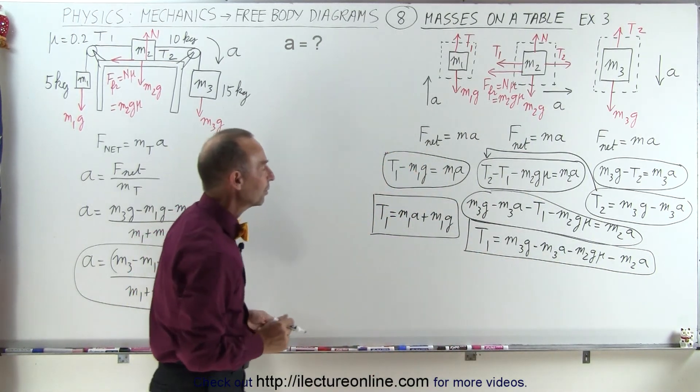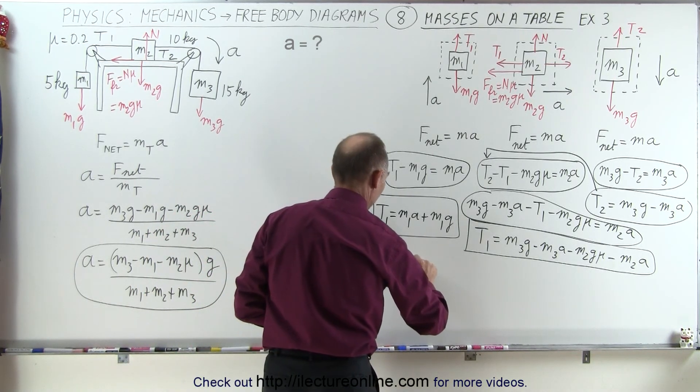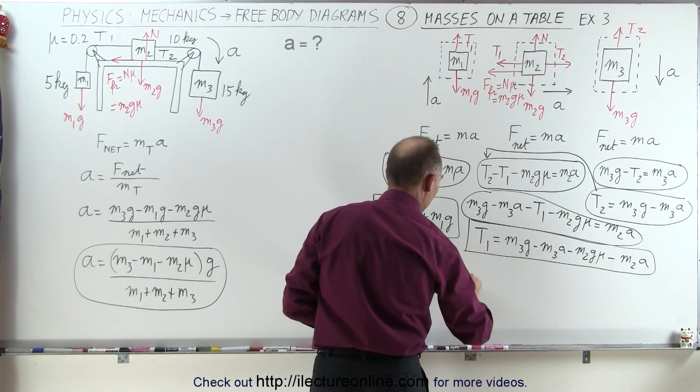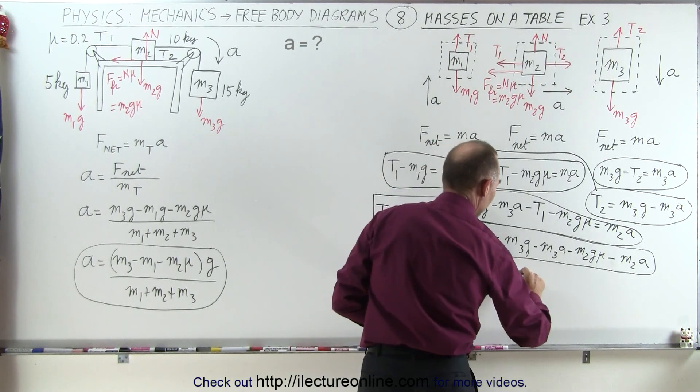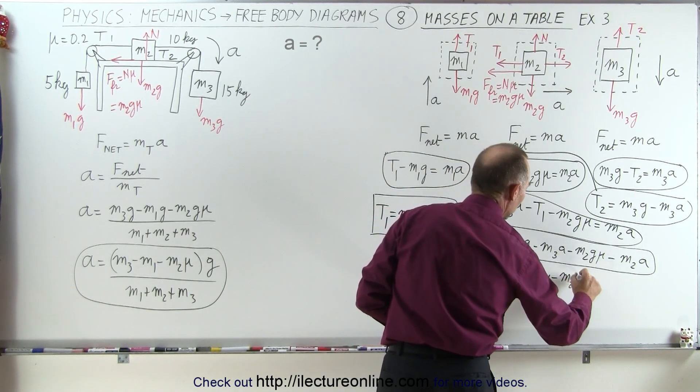Now we can set the two equal to each other, and we'll get the following: we get M1a plus M1g is equal to, on the right side, M3g minus M3a minus M2g mu and minus M2a.